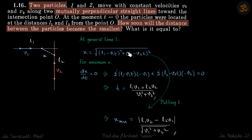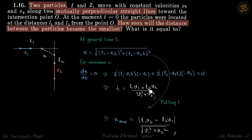Adding the squares of these gaps gives x squared, so x equals the square root of (l1 - v1*t)² + (l2 - v2*t)². At any general time, for minimum x we differentiate with respect to time. Doing so gives the value of t as (l1*v1 + l2*v2) divided by (v1² + v2²).